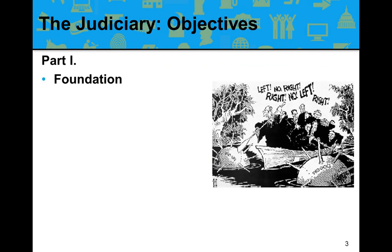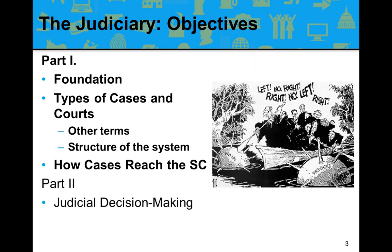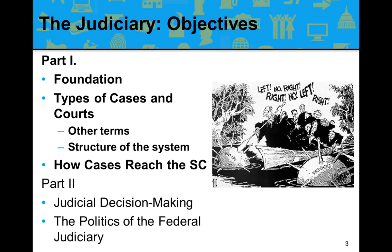In terms of the objectives for Part 1, which will be broken down into A and B, we're going to talk about the foundation of the judiciary — what types of cases the federal judiciary hears, what types of courts exist, how cases flow through the federal court system, and how cases reach the Supreme Court. In Part 2, we'll cover judicial decision-making, factors influencing judges, and the politics of appointing federal judges.